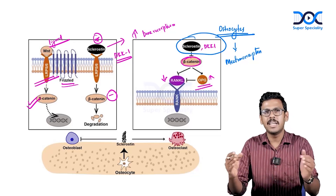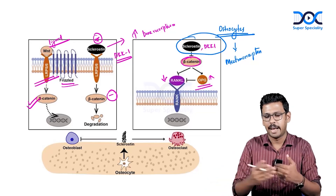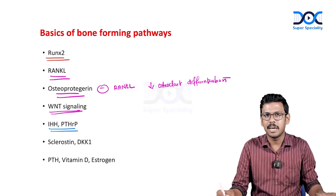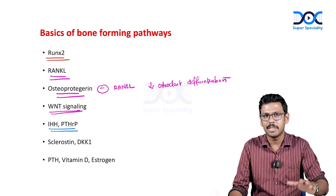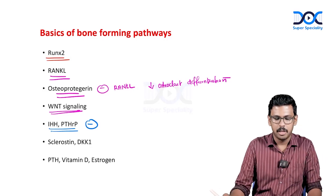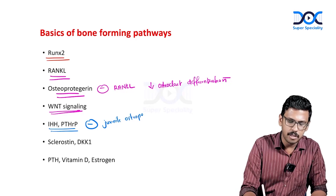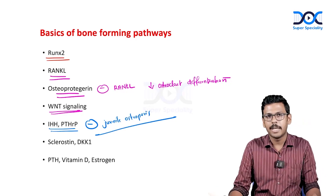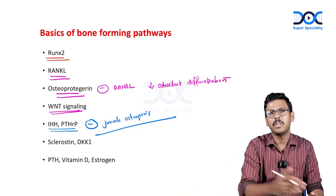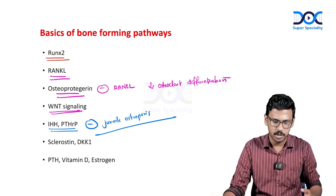After damaged bone is resorbed, RUNX2 signaling is activated, osteoblasts are activated, and new bone is laid down. There is always a complex interplay between pro-anabolic and pro-resorptive factors. Inactivating mutations of IHH or PTHrP — important bone-forming pathways alongside WNT signaling — result in premature or juvenile osteoporosis.